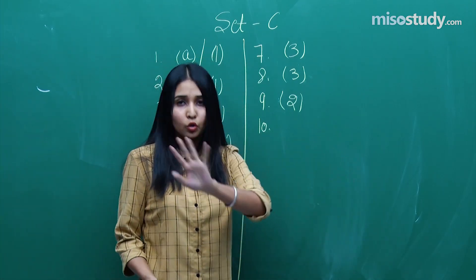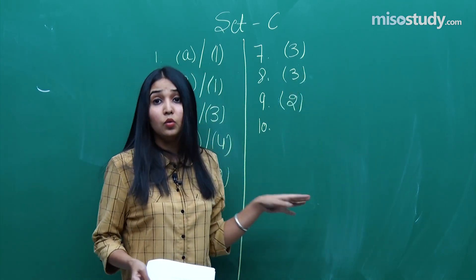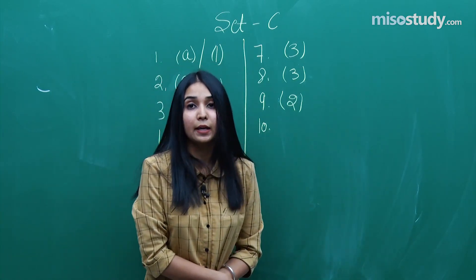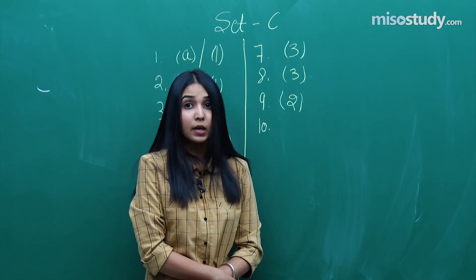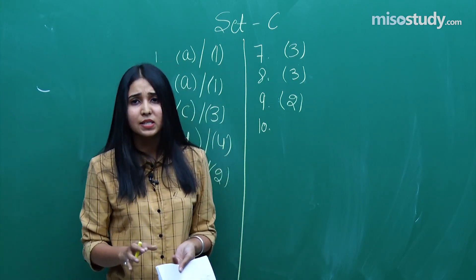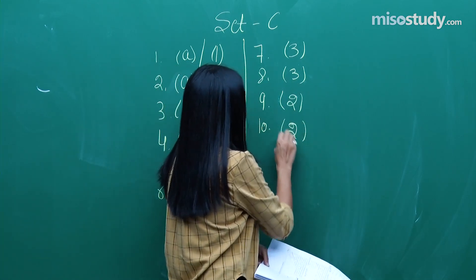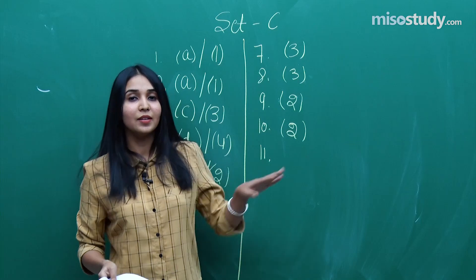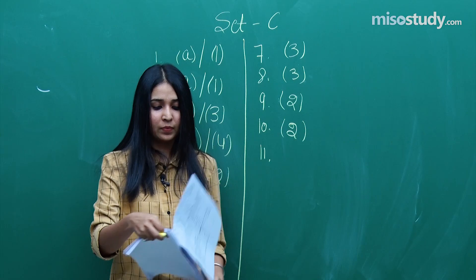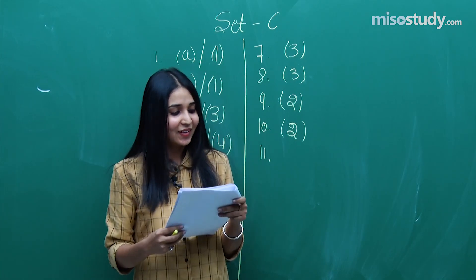We will talk about detailed solutions, so don't worry — we'll head towards that in some time. For now let's keep checking what we have done. Question number 10 was from chemical bonding, a theoretical question based on hybridization, and the answer for question 10 is option B.